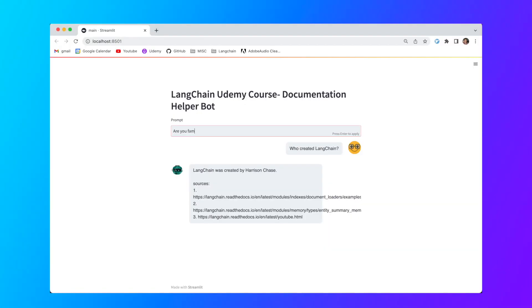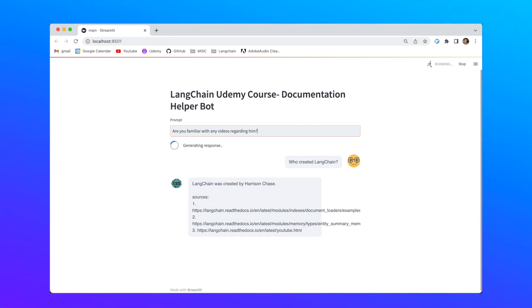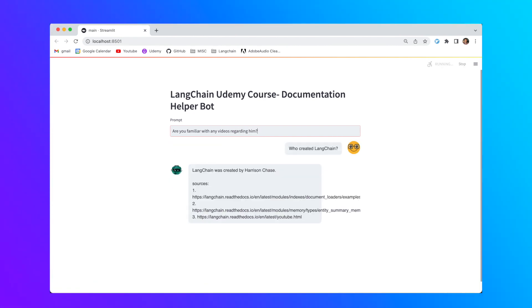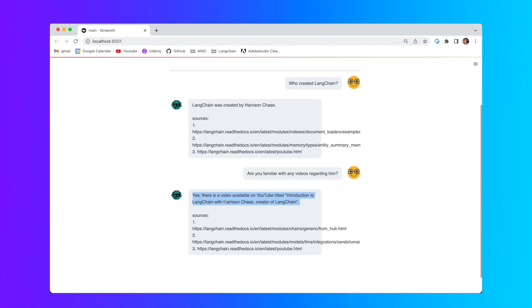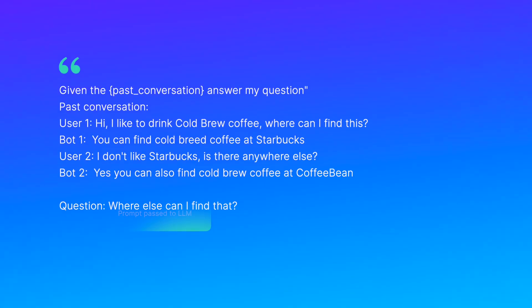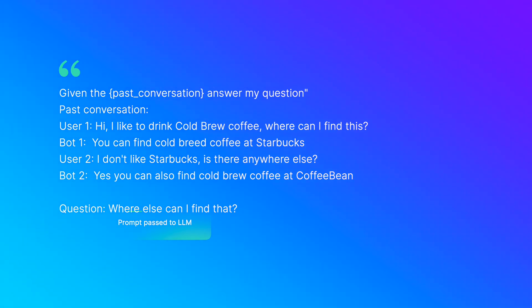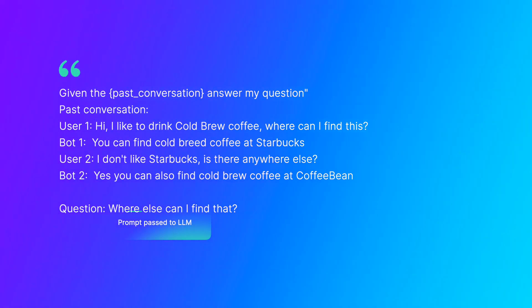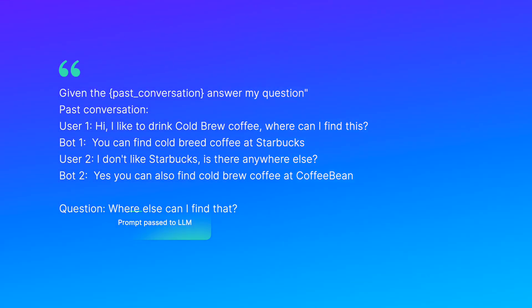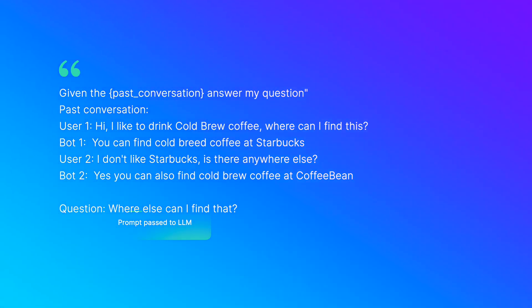The LLM was not able to do it because it didn't have a state, so it wasn't able to make a co-reference resolution. However, if the LLM's prompt includes the state and chat history, then it will be easily able to make the co-reference resolution. This is the underlying base to all the solutions that LangChain currently supports for memory — we find sophisticated ways to pass some data into the prompt.